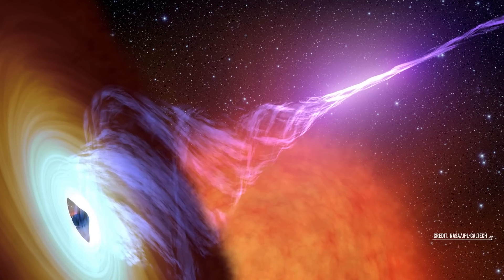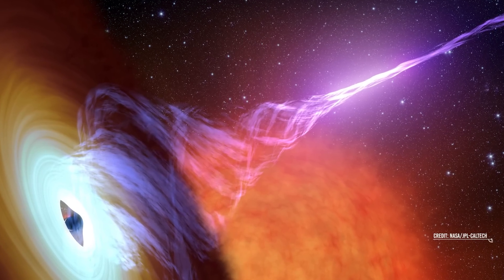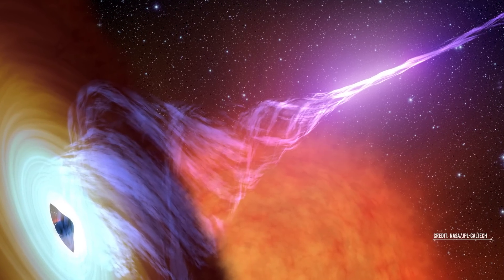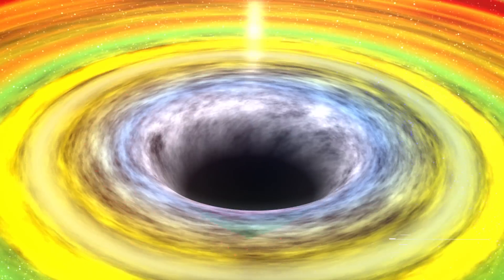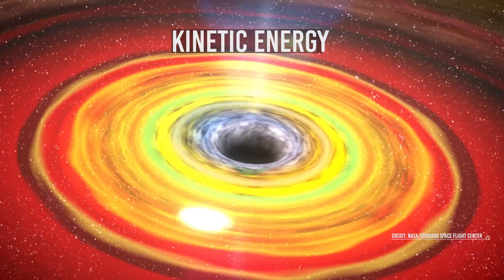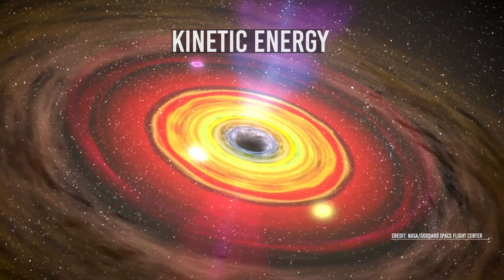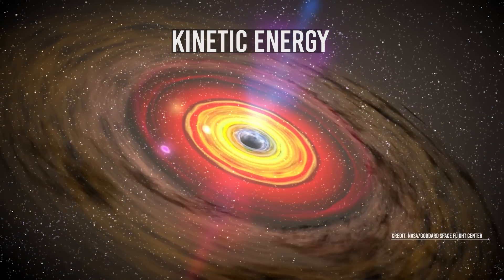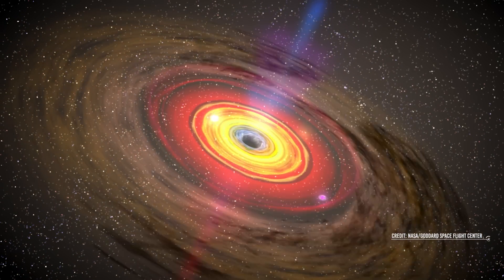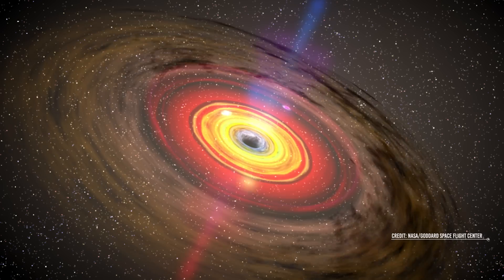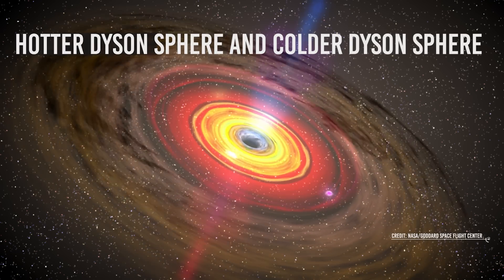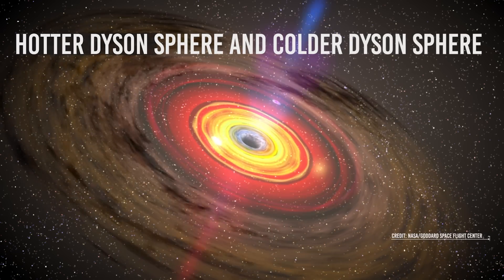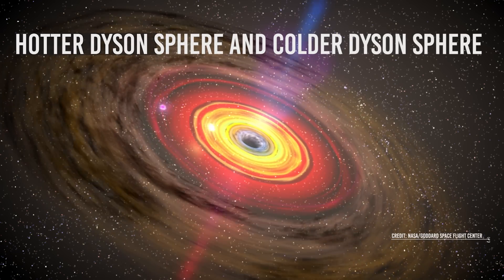Furthermore, if a Dyson sphere gathers not just electromagnetic radiation from the jets but also other forms of energy, for example kinetic energy, the total gathered energy would be nearly five times greater. The researchers discovered that such structures would be detected across many wavelengths, with hotter Dyson spheres visible in ultraviolet and colder Dyson spheres visible in infrared, precisely as Dyson anticipated.